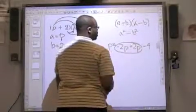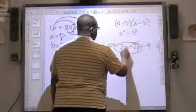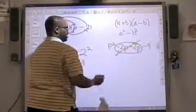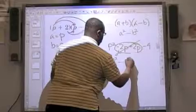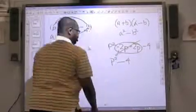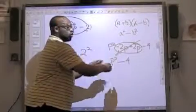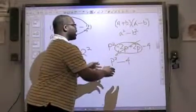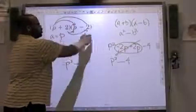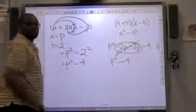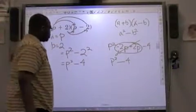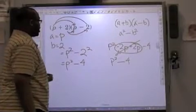Now, these two terms, they're additive inverses, so they're going to equal 0. And I have p squared minus 4. So we just proved that if we were to FOIL this out, we'd get the same answer, or the same simplification that we would get if we were to use our new special case method. Let's look at another example.